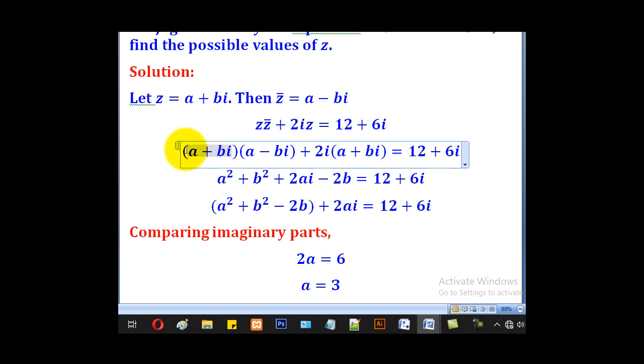So expand, this is a complex number and this conjugate, it will be equal to A squared plus B squared. For this one, 2ai, and minus. The minus comes from this i and this i, which is i squared, so minus 2B equals 12 plus 6i.